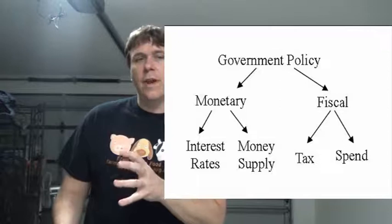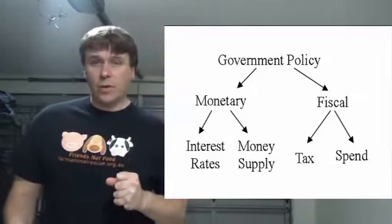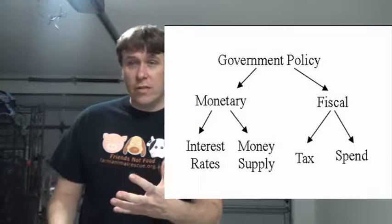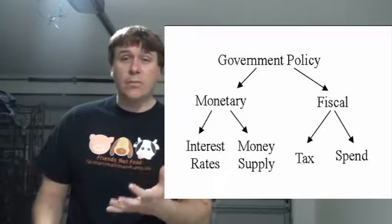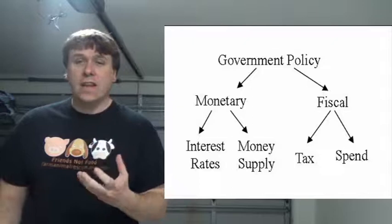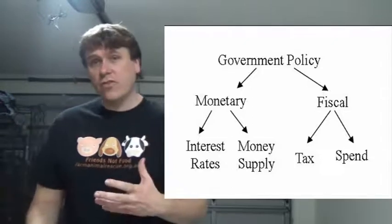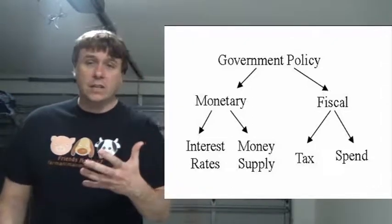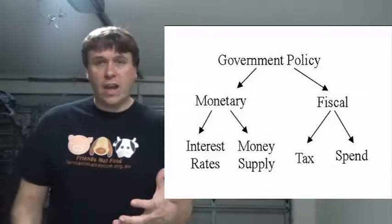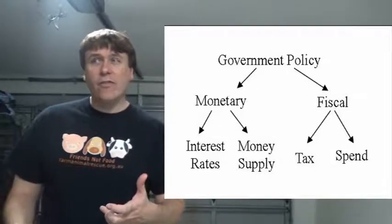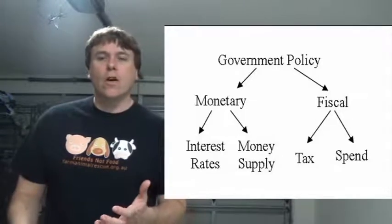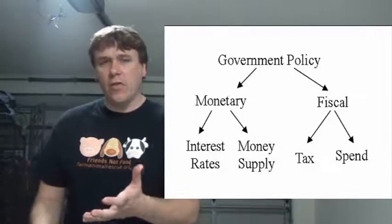Fiscal policy is where the government has a direct influence on what's actually happening, and it can be very targeted. Monetary policy differs in that it's mostly with central banks these days. They can increase or reduce interest rates and control the money supply. It's a very broad approach — a way of coping with inflation and promoting economic growth by allowing for cheaper investment through borrowing at lower interest rates.